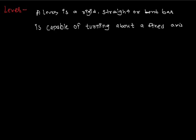In other words, the axis about which the lever turns passes through a point of the lever which is called the fulcrum. It is generally marked by the letter F. This point does not move but remains fixed when the lever is in use.